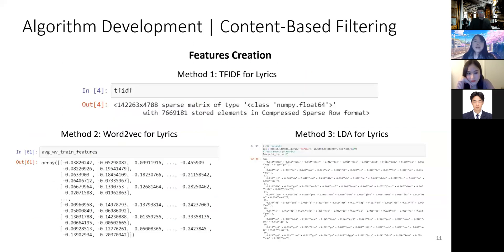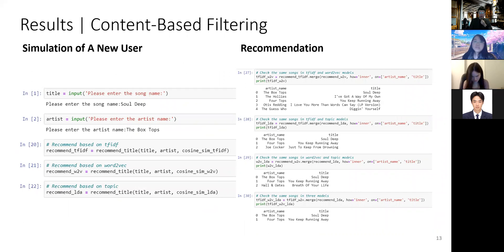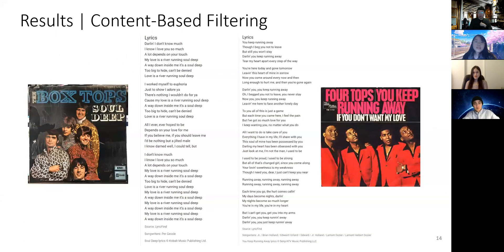We used the scikit-learn and Gensim packages in Python to create features based on three methods. We calculated cosine similarity among different songs' lyrics features and built a content-based recommendation system based on the ranking of cosine similarity. We simulated a new user coming to search for a song to see the recommended results. Three data frames were created after running the function, and there was one same song among all three methods. Therefore, our final recommended song related to the search for Box Top's Sophie was 'The Photo You Keep Running Away.' Based on the lyrics, both songs show a man wanting to express how much he loves a woman, so a person with unrequited love may enjoy both songs.